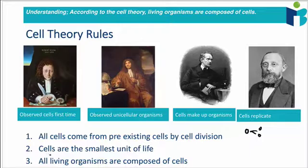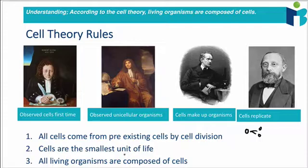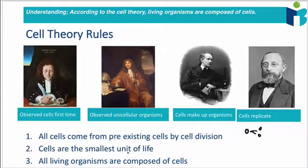The second rule of cell theory is that cells are the smallest unit of life. If you break down living organisms into the very smallest parts, cells are the smallest unit — you can't get any smaller than a cell itself. This is why a virus, for example, doesn't count as a living organism, because it's not actually composed of cells. The third rule is that all living organisms are composed of cells, so if anything is living, it must be made of cells.